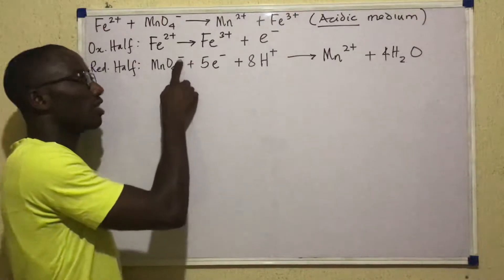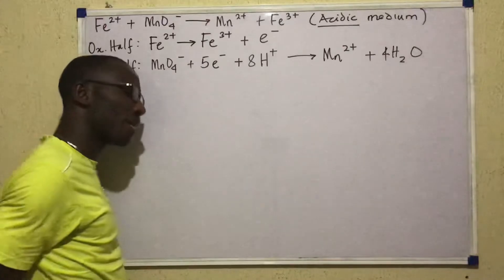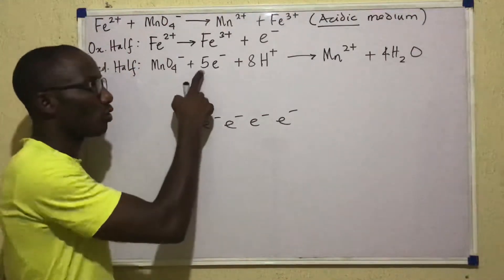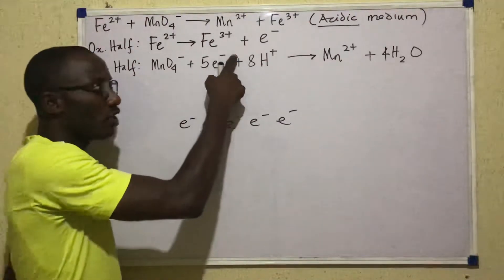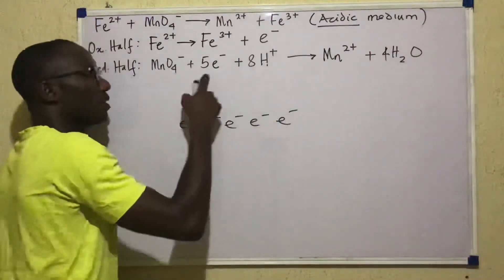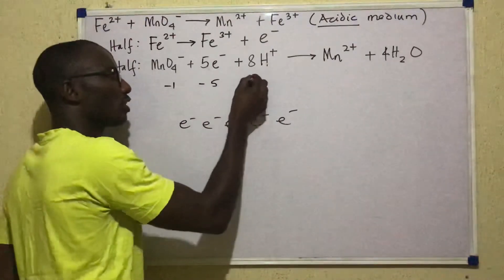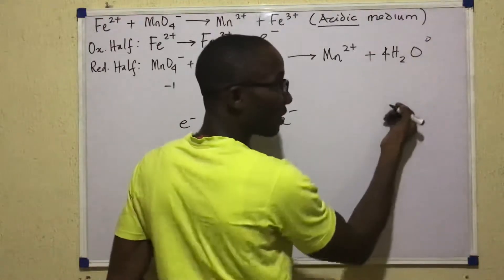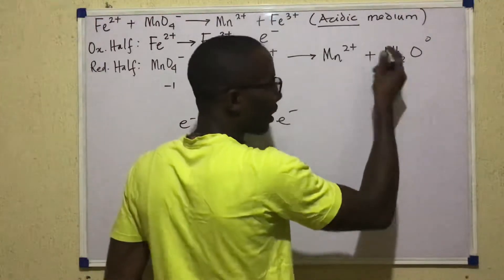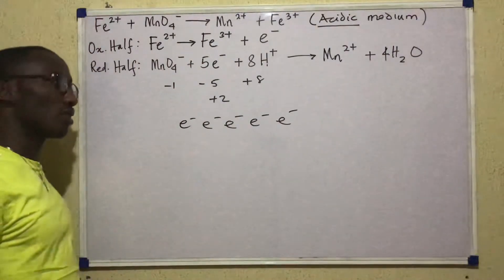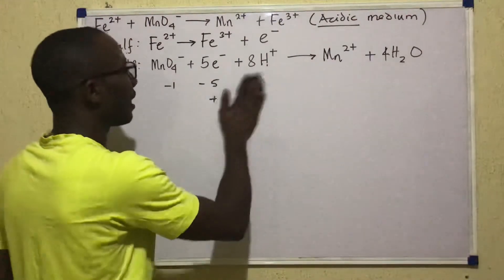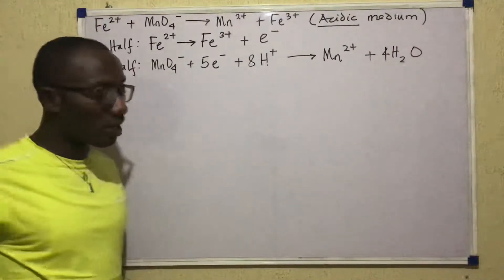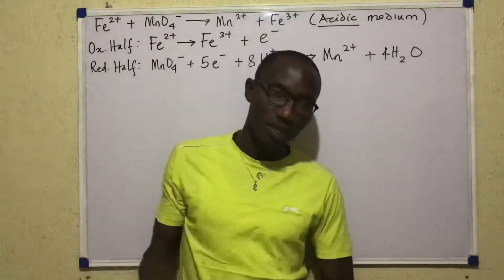For MnO4−, the charge is −1. For 5e−, that's 5 × (−1) = −5. For 8H+, that's +8. So total on the left: +8 − 5 − 1 = +2. On the right, water has a charge of 0 and Mn2+ has a charge of +2, so the overall charge on the right is +2. Left equals right — the charges are equal and the reduction half is balanced. I have successfully split the one equation into two balanced halves.